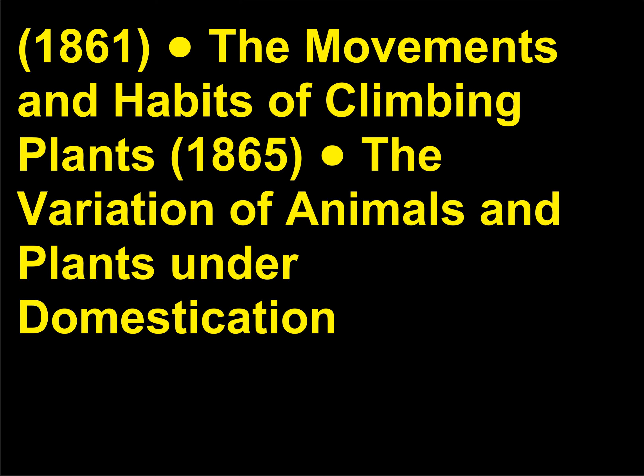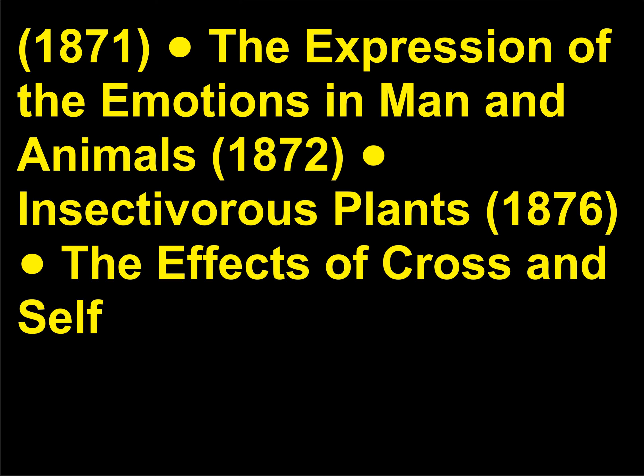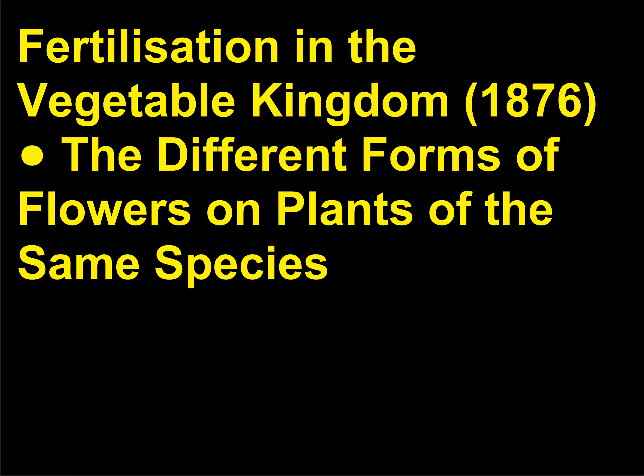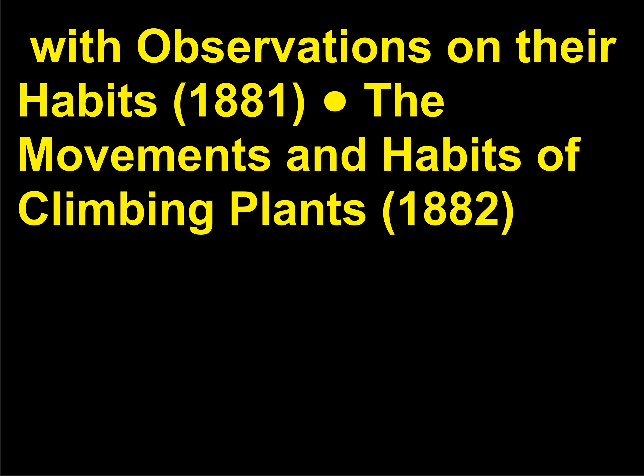The Variation of Animals and Plants under Domestication, 1868. The Descent of Man, and Selection in Relation to Sex, 1871. The Expression of the Emotions in Man and Animals, 1872. Insectivorous Plants, 1876. The Effects of Cross and Self Fertilisation in the Vegetable Kingdom, 1876. The Different Forms of Flowers on Plants of the Same Species, 1877. The Power of Movement in Plants, 1880. The Formation of Vegetable Mould, through the Action of Worms with Observations on their Habits, 1881. The Movements and Habits of Climbing Plants, 1882.